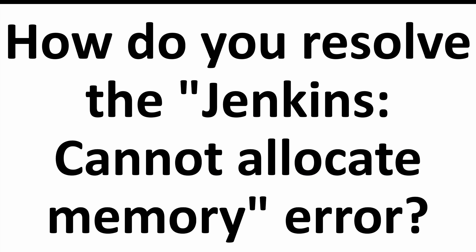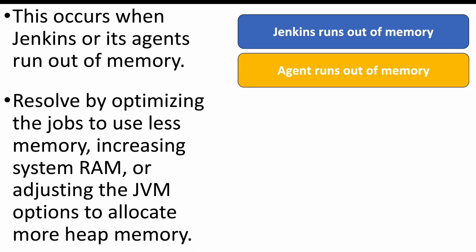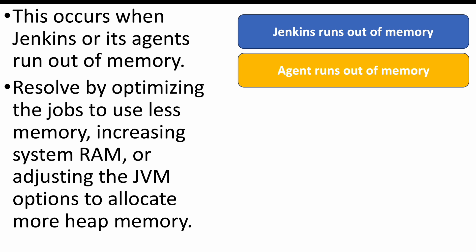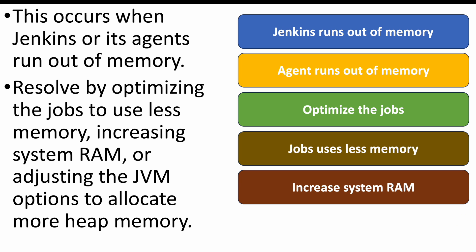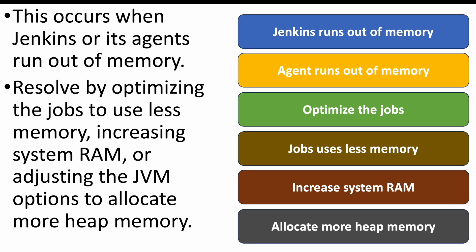The next question: how to resolve the 'Jenkins cannot allocate memory' error? This error occurs when Jenkins or agent machines run out of memory. To fix it, optimize jobs to use less memory, increase the system RAM, or adjust the JVM options to allocate more heap memory — addressing the issue on either the Jenkins master or agent machines.